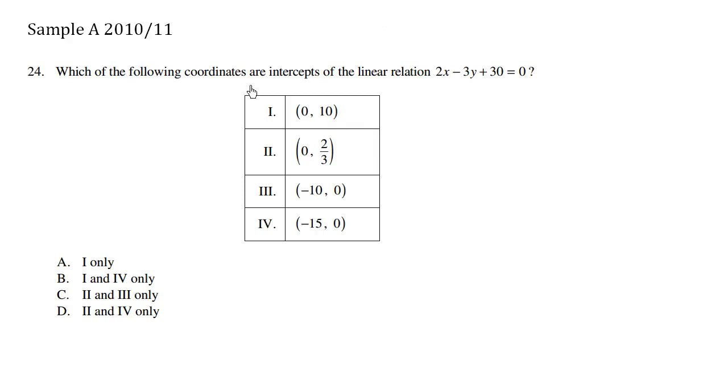Which of the following coordinates are intercepts of the linear relation 2x minus 3y plus 30 equals 0? Now we're talking about intercepts, and we're not given whether we're talking about x-intercepts or y-intercepts, so it could be either one. So let's solve for it.